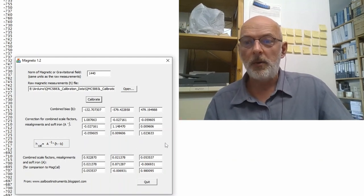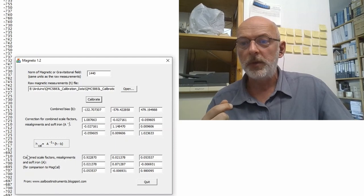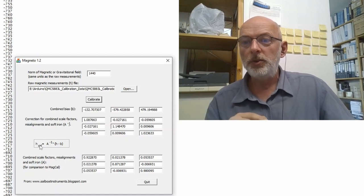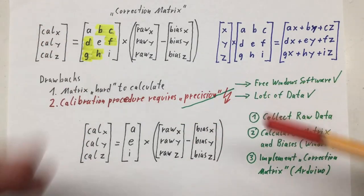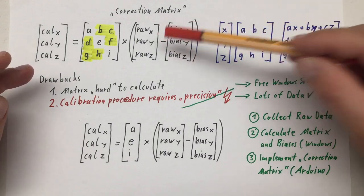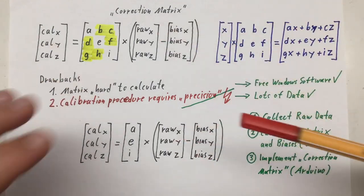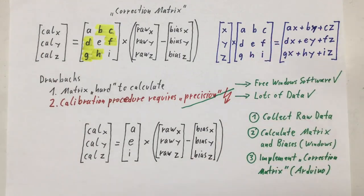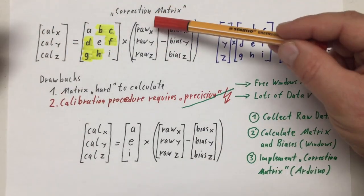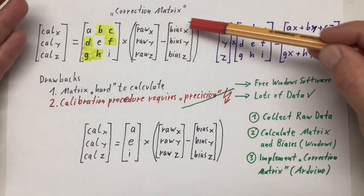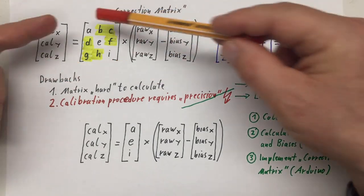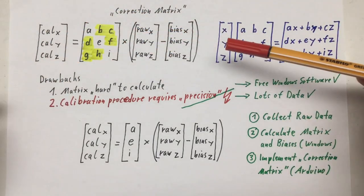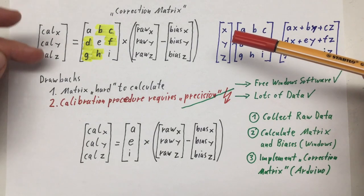That's our calibration data, and it already gives you the formula how to calculate the calibrated stuff. We've seen that, but here's a short recap. I won't explain again the matrix multiplication and subtraction stuff. We take our raw data x, y, z, and we subtract the biases x, y, z, and then we multiply the result with the correction matrix A to I. That gives us our calibrated values x, y, z.